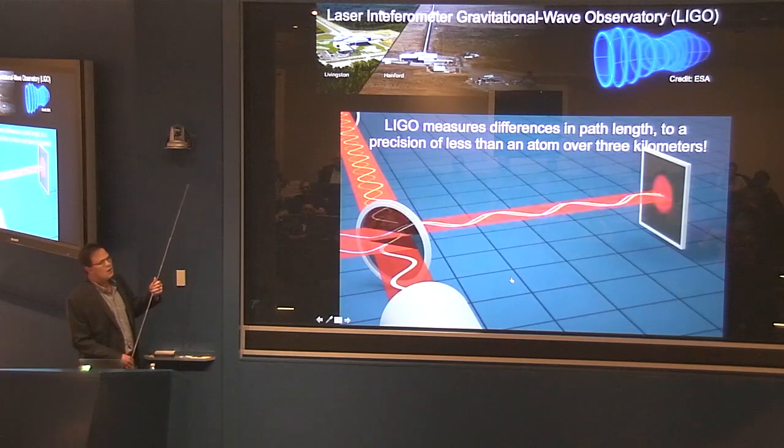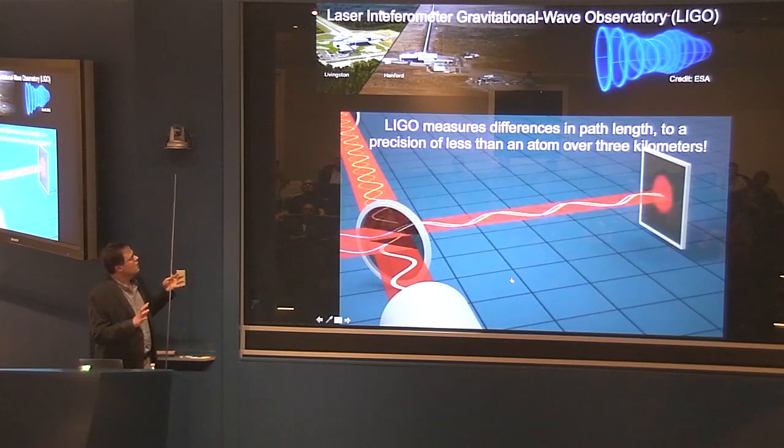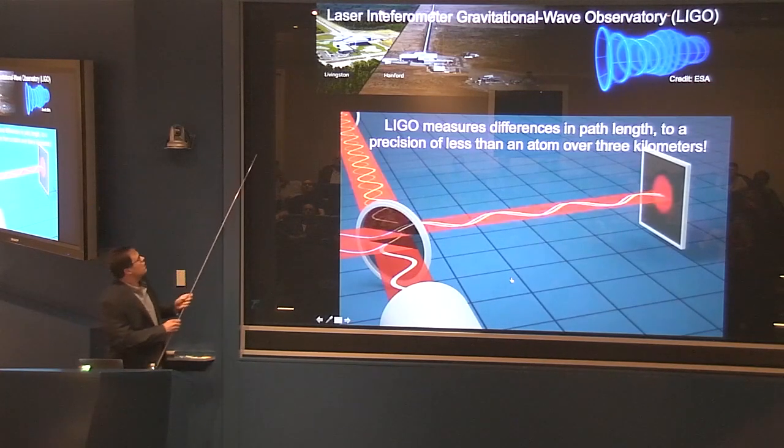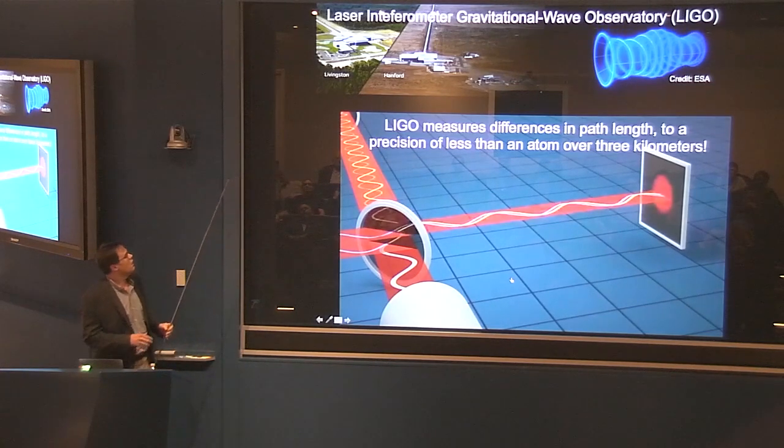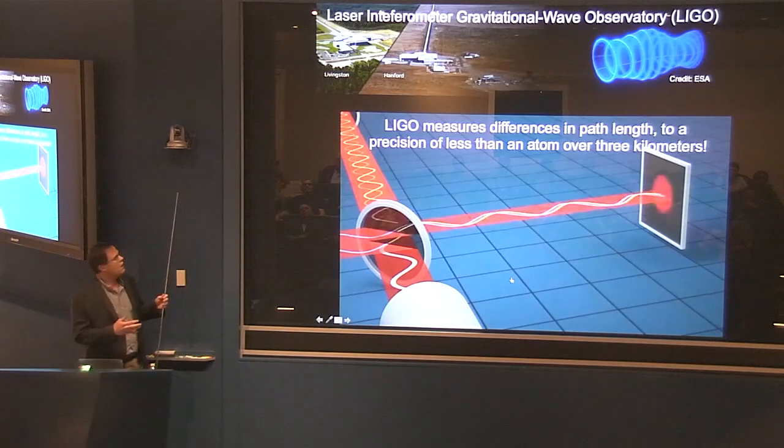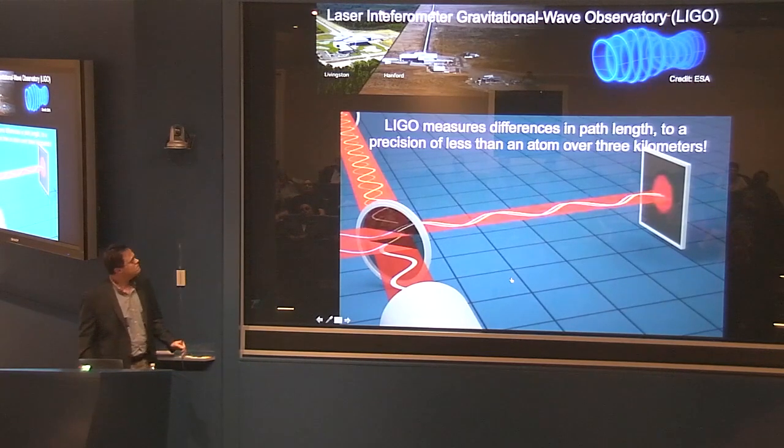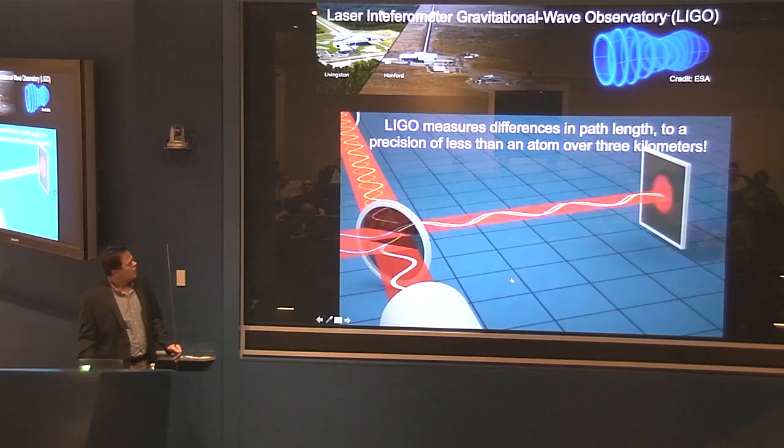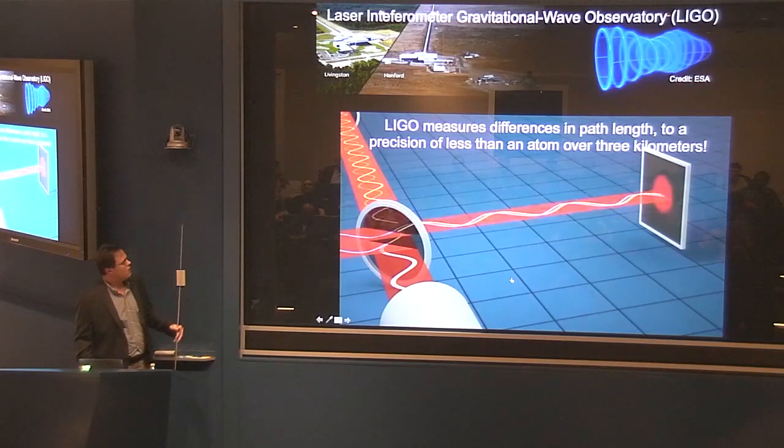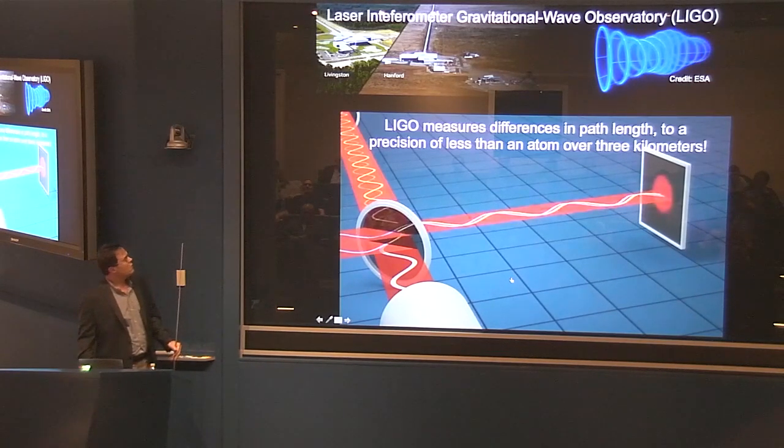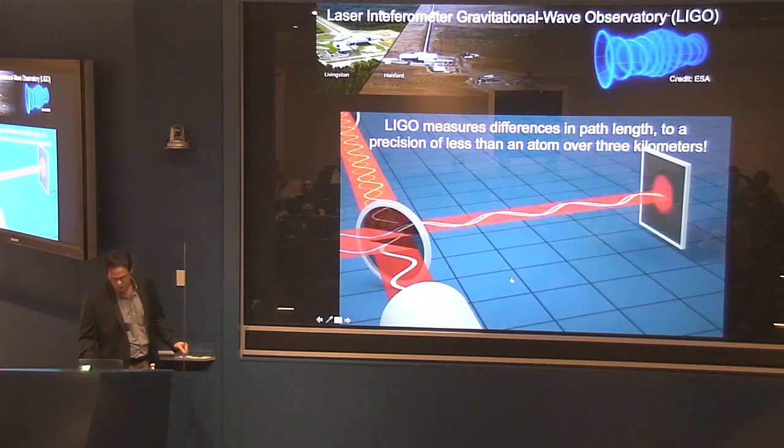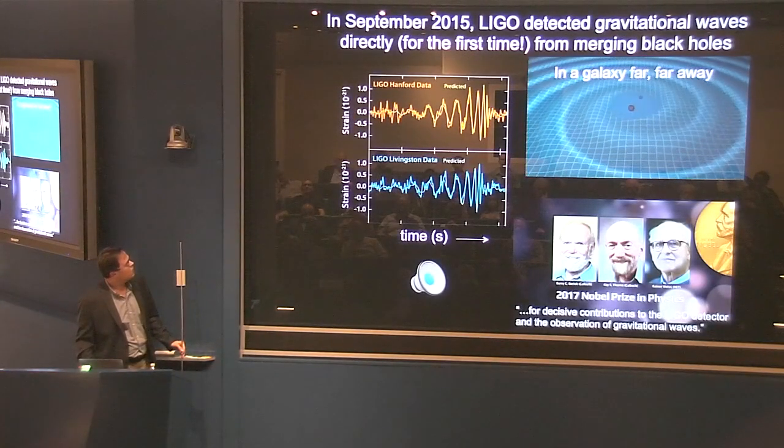There's two of these detectors. That's also important because then you can see if something is real, if you see it in the one in Livingston, Louisiana, and one in Hanford, Washington State, you know it's real. As I'll talk about, there are other gravitational wave observatories being developed on the Earth, but the two that are sort of in lead contention are the LIGO ones.